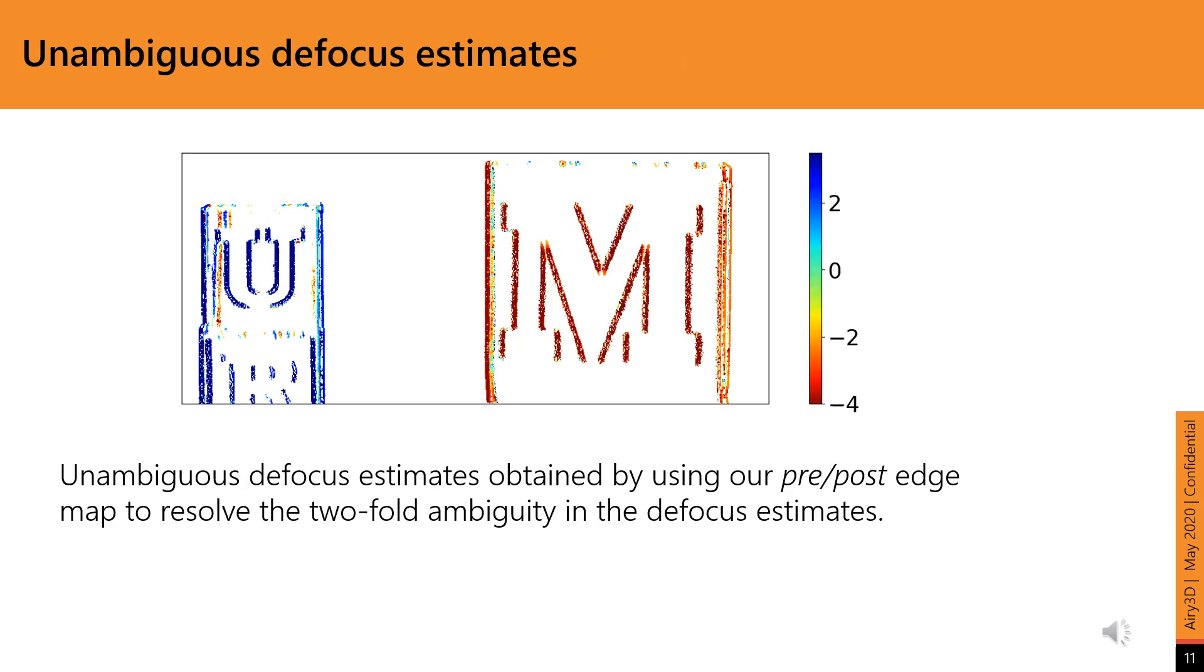We can resolve the ambiguous estimates from the earlier slide by multiplying them with the pre-post edge map. Recall that in the pre-post edge map, a value of plus 1 corresponds to a post-focus edge and minus 1 to a pre-focus edge. In the resolved defocus map, positive defocus values are from post-focus edges and negative ones from pre-focus edges. Here, we show the unambiguous defocus estimates obtained using this approach. We have some more interesting scenes in the next few slides.